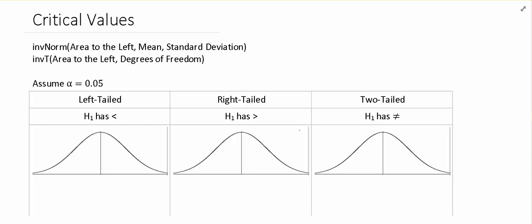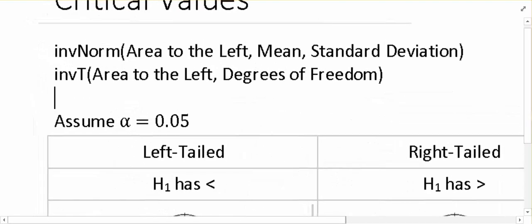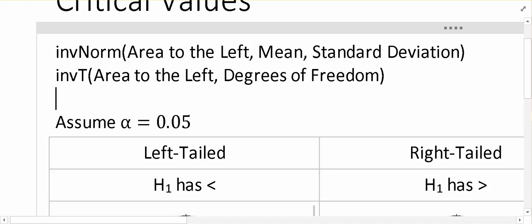So in that case to find the critical value, we would use inverse t. Now for both of these functions, I have the format right here on the screen. I want to remind you that the format in both, and we'll go ahead and zoom in on the screen to it, the format is that we always input the area to the left of the point we're looking for.